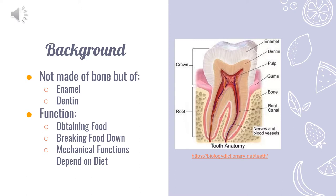Teeth help assist animals by obtaining food and also by breaking down food for digestion. The specific mechanical functions of teeth depend on the animal's diet and the animal itself. Some mechanical functions are the aid in piercing skin, tearing up meat, grinding up vegetables and plant materials, using teeth to hold food, and some animals use combinations of these.